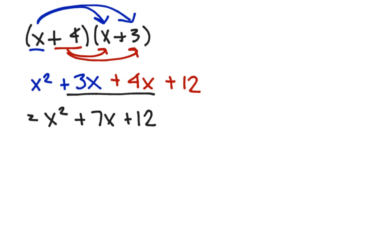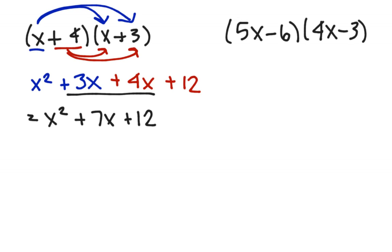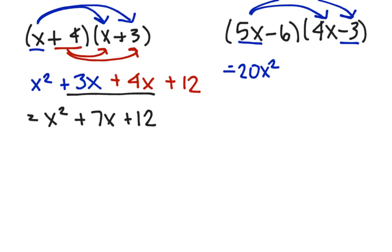Next, let's say we have 5x minus 6 times 4x minus 3. Distributing first the 5x: 5x times 4x is 20x squared. When distributing the 5x to the 3, we have to include the negative sign again. So 5x times negative 3 is negative 15x.